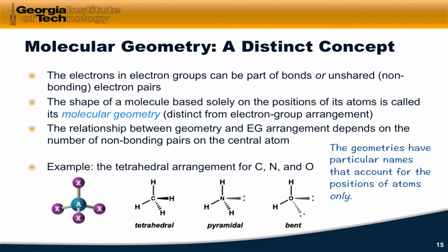Nitrogen has a valence of only three and has five valence electrons total, and so it has one lone pair in its structure in NH3. If we account only for the positions of the atoms within this structure and think about what we would call this geometry, it looks like a trigonal pyramid, and so it's called pyramidal.